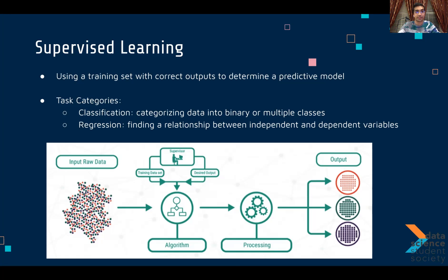Within supervised learning you have two major task categories. Classification is when you categorize data into binary — just two classes — or multiple classes. For example, categorizing a picture as food or drink would be binary, and classifying different types of food or beverages within that would be multi-class. Regression, discussed in many statistics classes, aims to find a relationship between an independent or explanatory variable and a dependent variable. The dependent variable is generally continuous and numerical, so you can fit either a linear or nonlinear model to it.